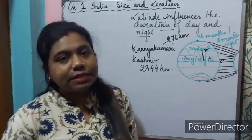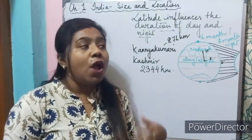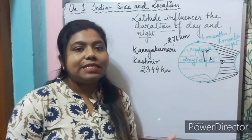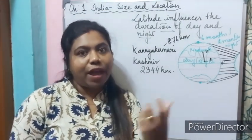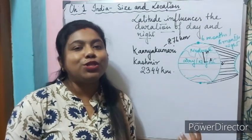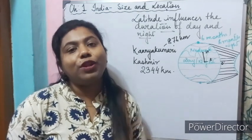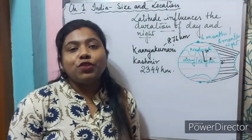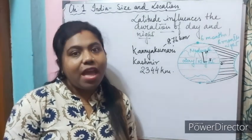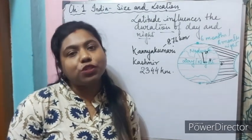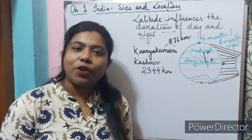So I hope you all understand today the location and size of India, why 82°30'E East was selected as the standard meridian, why there is a time lag of 2 hours, and how longitude influences time while latitude influences the duration of day and night. If you liked the video, please give a thumbs up, share it to benefit other students, and don't forget to subscribe. Thank you.